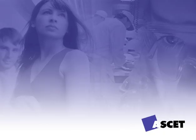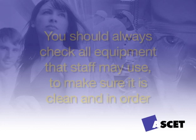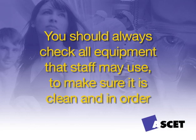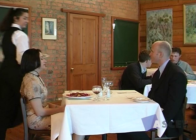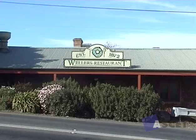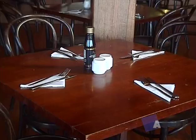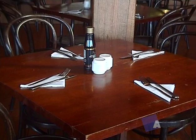You should also check all equipment that staff may use to make sure it's clean and in order. The next question you must ask is: is the environment appropriate for the kind of guests your venue wishes to attract? The environment in your dining area is important. People who go out to eat generally expect a comfortable and relaxing time. To achieve this, restaurants have usually used soft instrumental music and soft lighting. However, it must be remembered that each restaurant will have its own particular environment, depending on the house style and the type of customers it wants to attract.